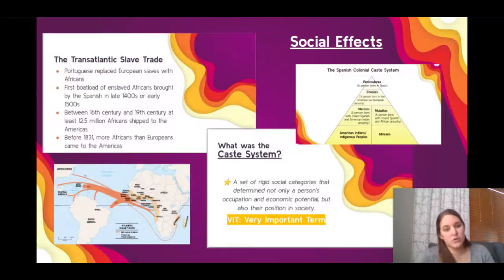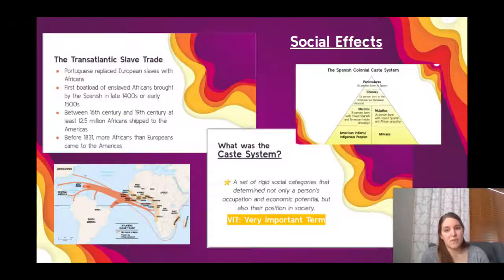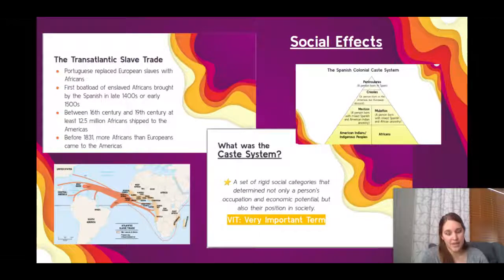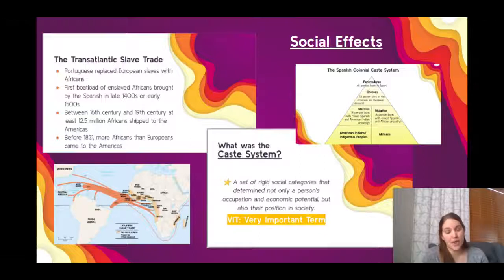Moving on to the social effects — our effects on people — probably the two biggest are the development of the transatlantic slave trade, where millions of Africans were enslaved and shipped over the Middle Passage into the New World, and the development of a caste system. Through the Encomienda system and the transatlantic slave trade, we see a very rigid social stratification where people born in Europe had significantly more power and wealth than American Indians and Africans, while mixed populations fell somewhere in the middle. We see a complete shift in who has power, wealth, liberty, and freedom.